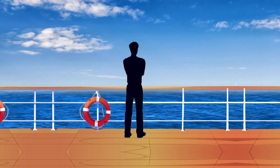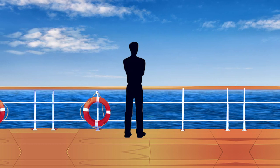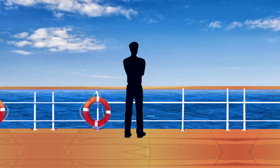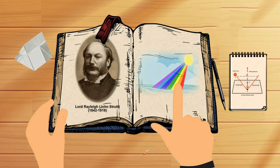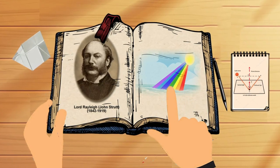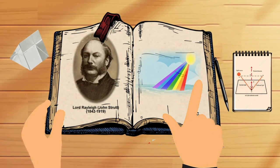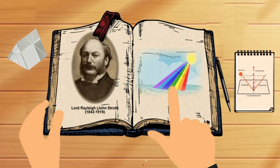While travelling on the ship, Raman observed the blue colour of the Mediterranean Sea. He studied Lord Rayleigh's explanation about the blue colour of seawater being just the reflection of light from the water.